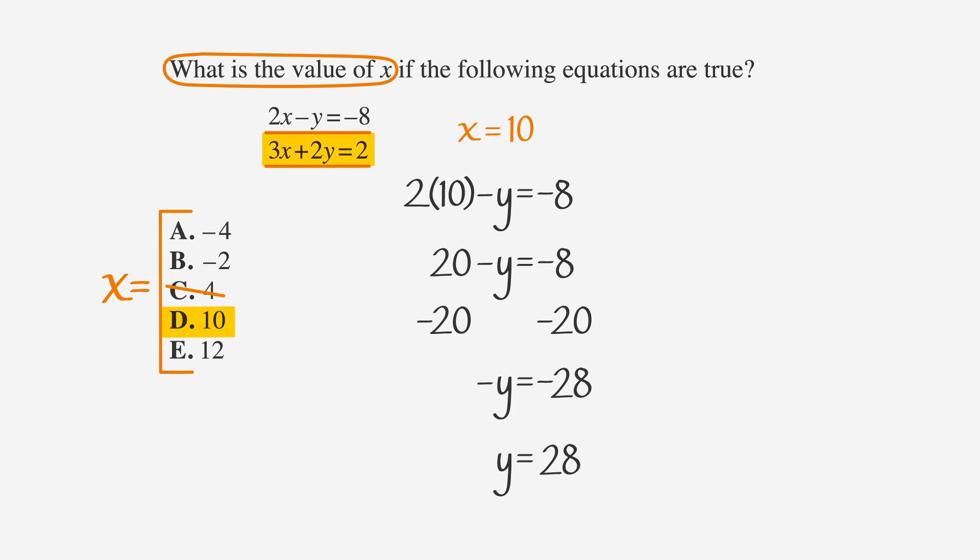And our second equation is 3 times 10 plus 2y equals 2, or 30 plus 2y equals 2. That gives us 2y equals negative 28, so y equals negative 14. Since 28 and negative 14 are further apart than negative 5 and 16, we can say that we've gone in the wrong direction. So we can cross out D.